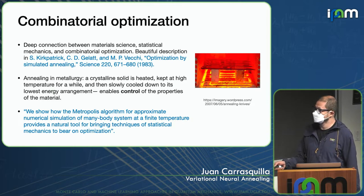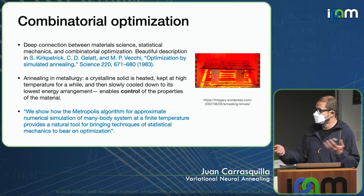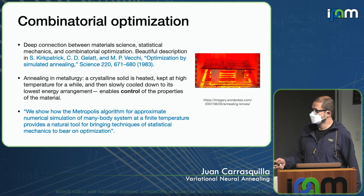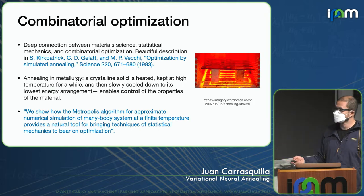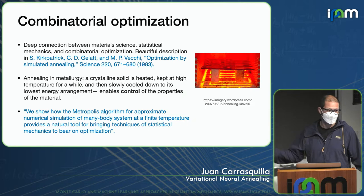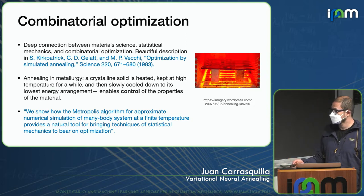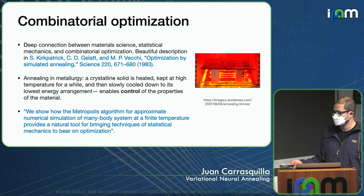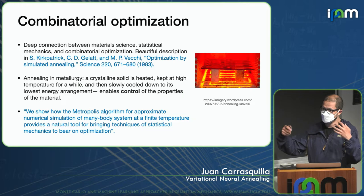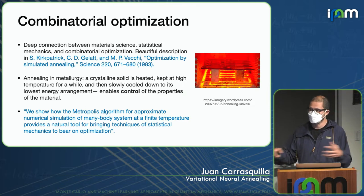They call it simulated annealing because this technique mimics annealing in metallurgy — where you heat up a crystalline solid, keep it at high temperature for a while, and then slowly cool it down to its lowest energy arrangement, which gives you control over the properties of the material. The Metropolis algorithm, used for numerical simulations of many-body systems, is a natural tool to solve optimization problems by simulating the system at high temperature and then slowly decreasing it until you find the ground state configuration of the encoding of the problem.